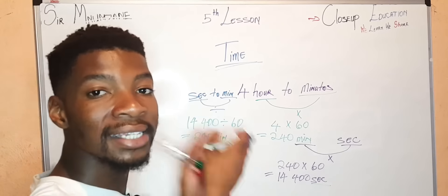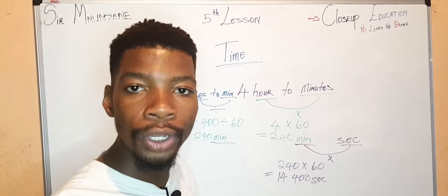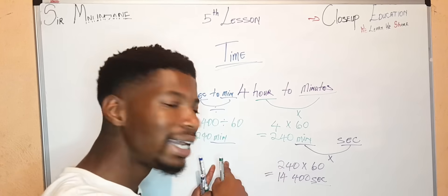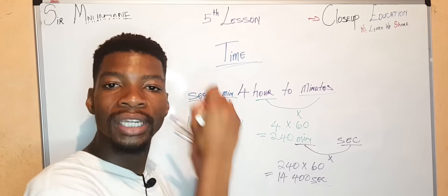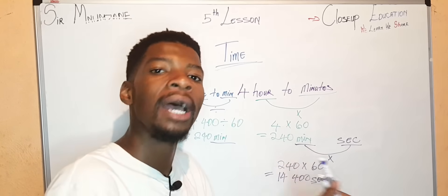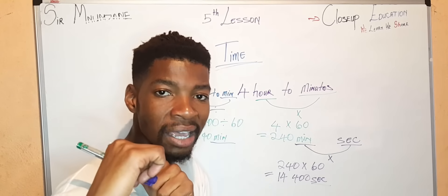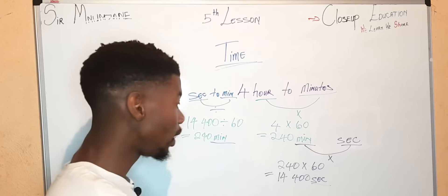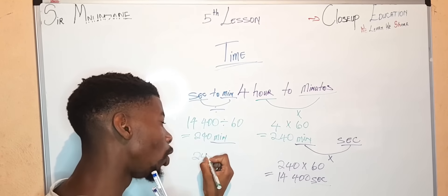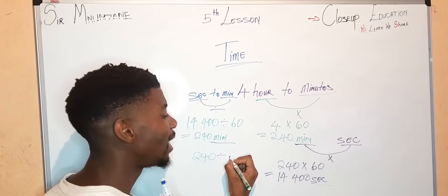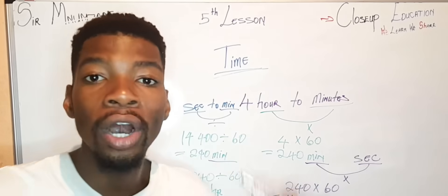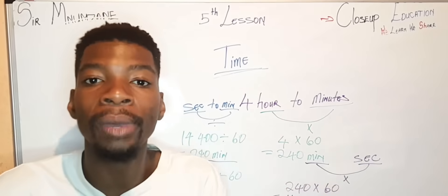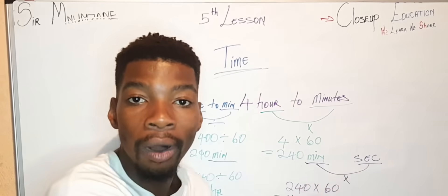Now convert 240 minutes into hours. A minute is much smaller than an hour, so we divide — as our matrix system tells us. We say 240 divided by 60 equals 4 hours.